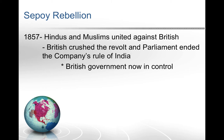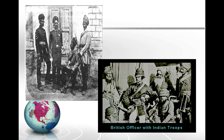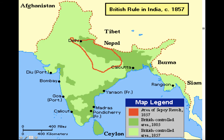Here you can see pictures of the sepoys wearing their turbans as part of their culture, along with a British soldier with Indian troops who helped fight against the Sepoy Mutiny. The orange area on the map shows where most of the fighting took place. Before the mutiny, the British controlled the dark green territory from 1805; after the mutiny by 1857, they controlled all of India.